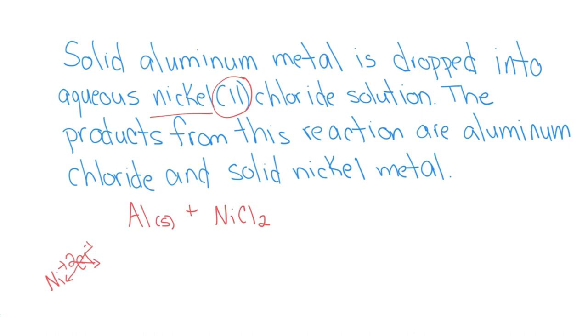The products from this reaction are, so now we're talking about products. I can draw my arrow. The products from this reaction are aluminum chloride. That is an ionic compound. So I'm going to come over here and calculate that, put this formula together.